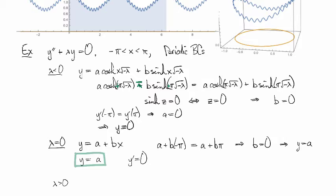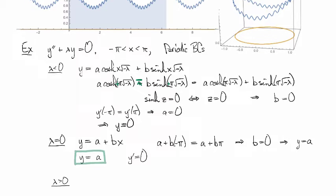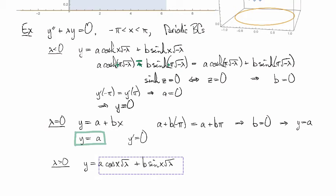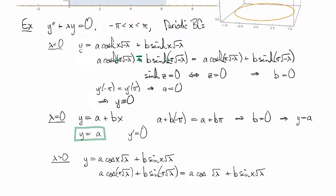And what about if lambda is positive? So if lambda is positive, then our general form for the solution looks like a cosine x root lambda plus b sine x root lambda. And so if we evaluate this one at minus pi and pi, let's see. So these are supposed to be equal, and we're evaluating the first one now at minus pi. And we'll evaluate the second one at pi.